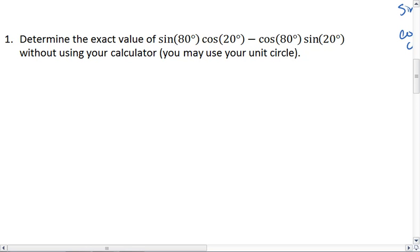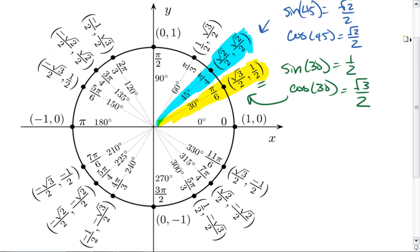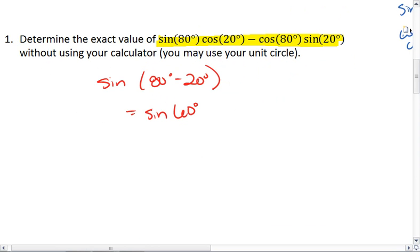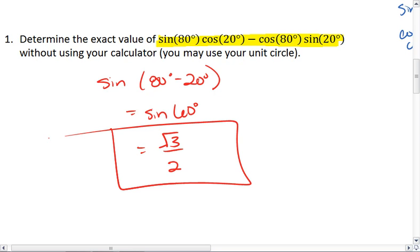All right, so this should actually put you in mind of the sum and difference formula for sine. And we see that this is what would happen if you had sine of 80 degrees minus 20 degrees, which is equal to sine of 60 degrees. And we can go to our unit circle and see that sine of 60 degrees is rad 3 over 2. And that's it.